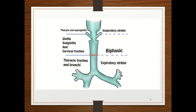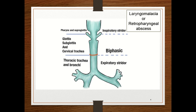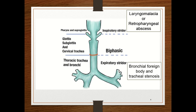Stridor can be inspiratory, expiratory, or biphasic. Inspiratory stridor occurs when there is obstruction at the level of the pharynx and supraglottis. Causes can be laryngomalacia, retropharyngeal abscess, and so on. Expiratory stridor occurs when there is obstruction at the level of the thoracic trachea and bronchi. Causes can be bronchial foreign body, tracheal stenosis, and so on.